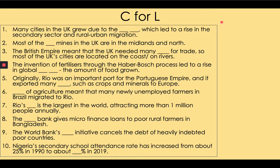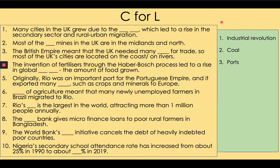Number 1: Many cities in the UK grew due to the Industrial Revolution, which led to a rise in the secondary sector and rural to urban migration. Number 2: Most of the coal mines in the UK are in the Midlands and North. Number 3: The British Empire meant that the UK needed many ports for trade, so most UK cities are located on the coast or on rivers. Number 4: The invention of fertilizers through the Haber-Bosch process led to a rise in global crop yields, which is the amount of food grown.